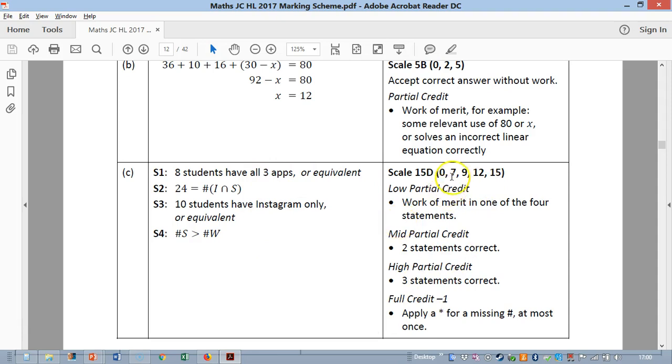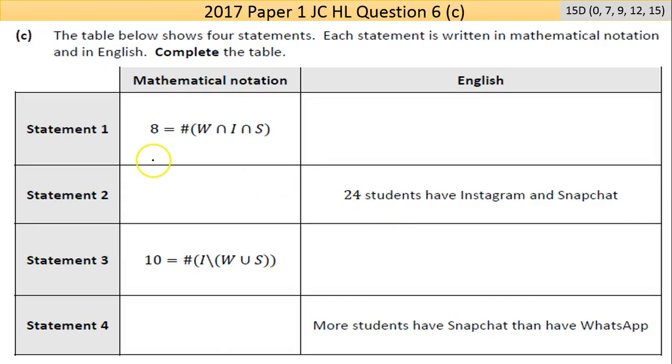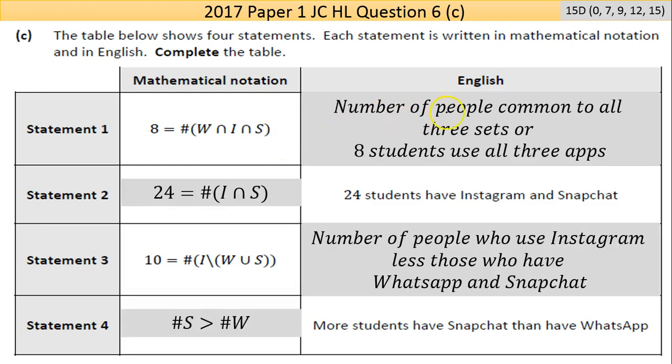We go back here now. 8 equals the number of WhatsApp intersected with Instagram intersected with Snapchat. So let's just say that: number of people common to all three sets, or you could say 8 students use all three apps. That's taken from the marks.